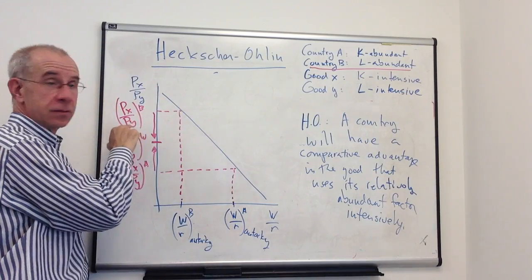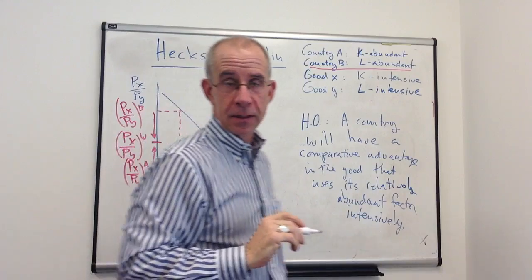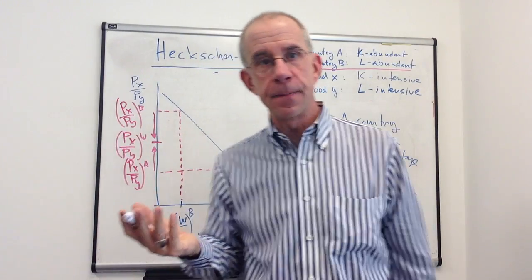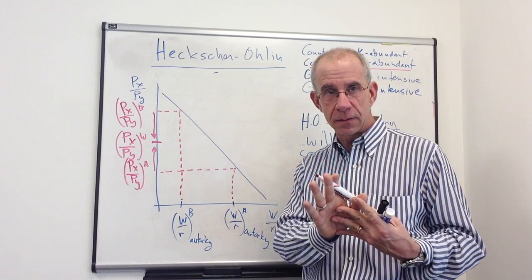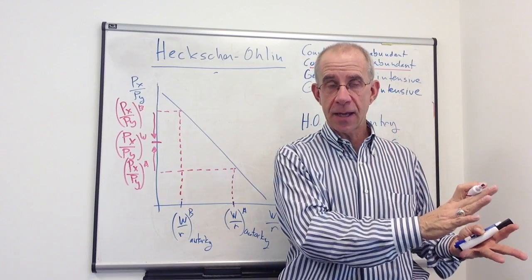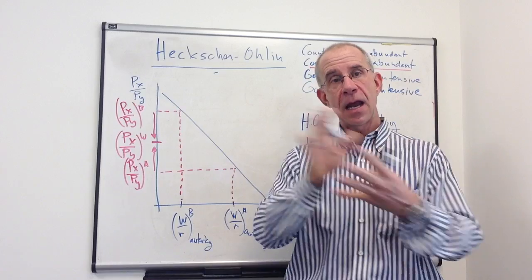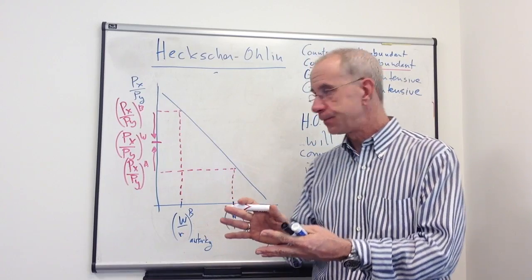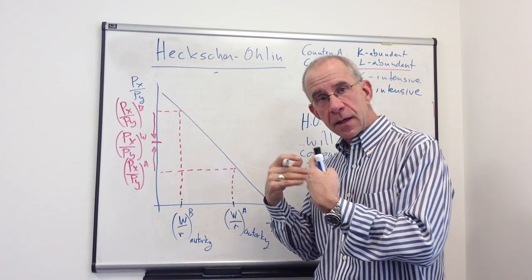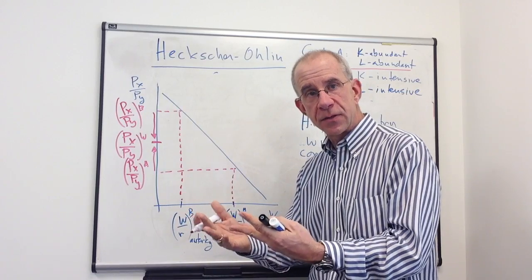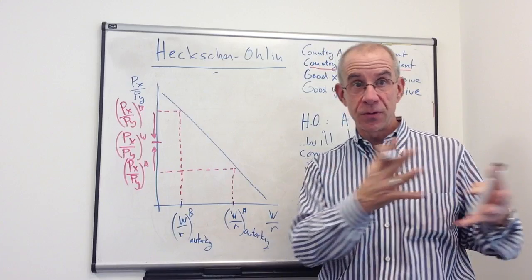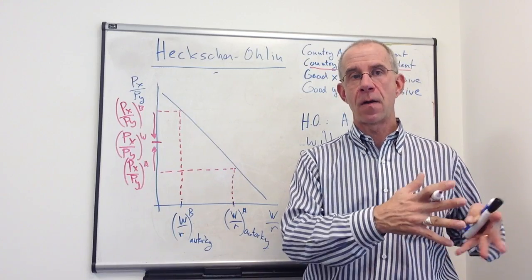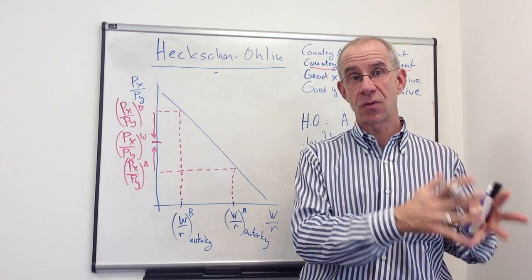The price of X is going to go down in country B. The price of Y goes up. So in country B, that is a signal to produce less of the capital intensive good and more of the labor intensive good. So in the country that's exporting the labor intensive product, they start to move resources around. They start to produce more of the labor intensive good, less of the capital intensive good.